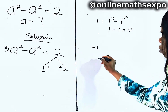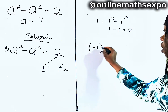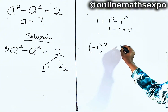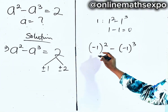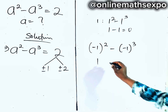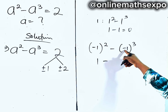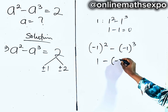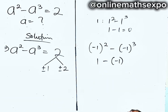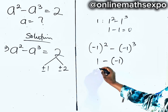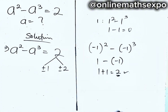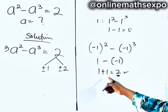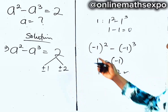We can also try negative 1. So we're going to have negative 1 squared minus negative 1 cubed. When you square a negative, it gives you a positive. When you cube a negative, it returns you to negative, so you have negative 1. When you open it up, it gives you positive 1, and when you add it, it gives you 2. So that number is negative 1.